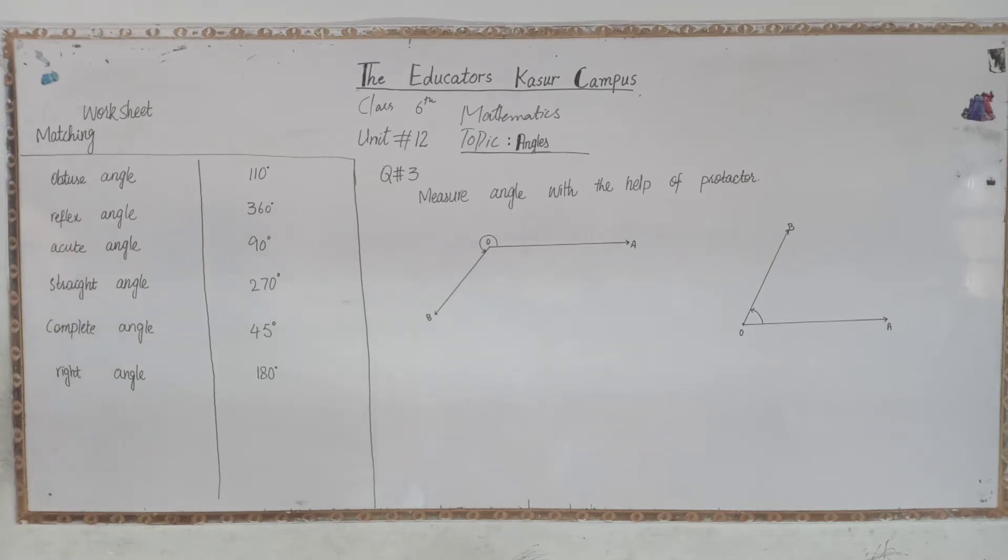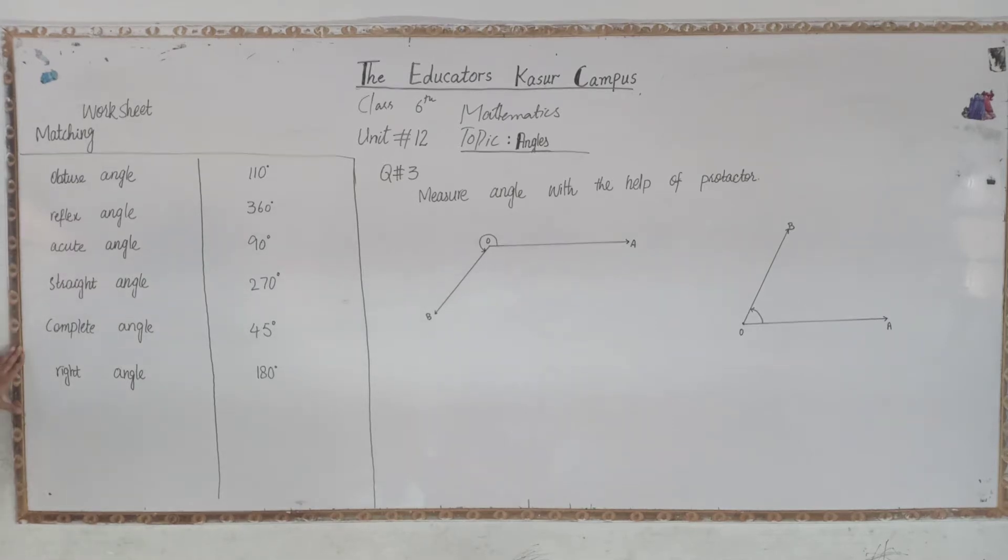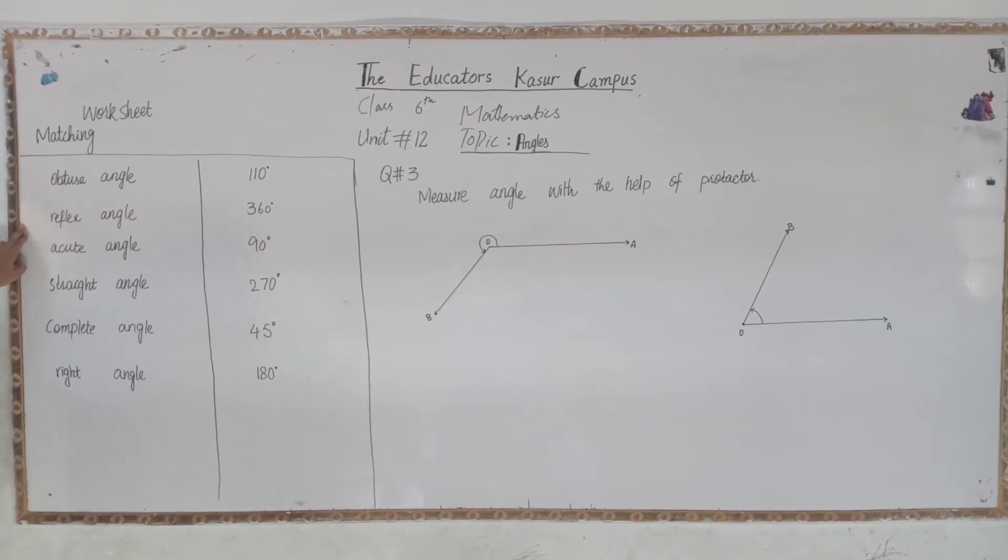First of all, question number 2 was our matching. There are some columns in it. We have to match them with the right option, like with obtuse angle. So the definition of obtuse angle is in your mind. What was it?